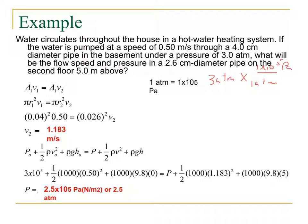So let's look at Bernoulli's problem. Water circulates throughout the house in a hot water heating system. If the water is pumped at a speed of 0.50 meters per second through a 4.0 centimeter diameter pipe in the basement under a pressure of 3.0 atmospheres, what will be the flow speed and pressure in a 2.6 centimeter diameter pipe on the second floor 5.0 meters above?